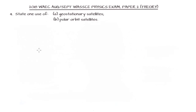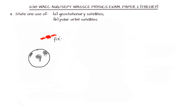In this question, we are asked to state one use each of geostationary satellites and polar orbit satellites. Geostationary satellites are generally regarded as satellites fixed over a particular point above the Earth's equator. Because this satellite is fixed, it is quite useful for monitoring and broadcasting — all major communication devices use geostationary satellites. It is fixed at about 36,000 kilometers above the surface of the Earth.